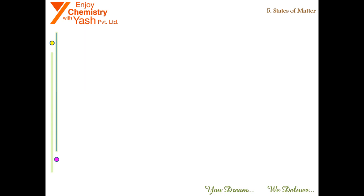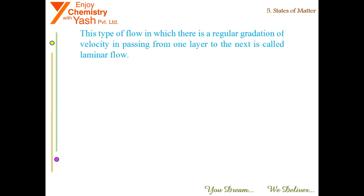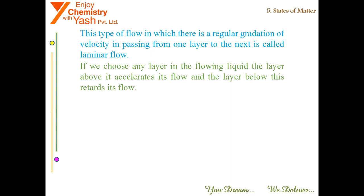This type of flow in which there is a regular gradation of velocity in passing from one layer to the next layer is called laminar flow. If we choose any layer in the flowing liquid, the layer above it accelerates its flow and the layer below retards its flow.